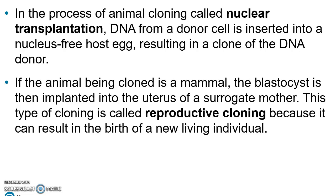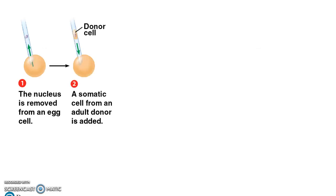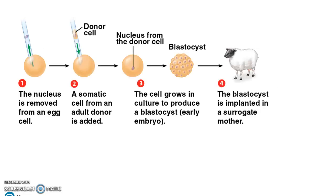If the animal being cloned is a mammal, the blastocyst — a very early developmental stage just after the zygote — is implanted into the uterus of a surrogate mother. That type of cloning is called reproductive cloning because it can actually result in the birth of a new living individual. This diagram shows the process of implanting the blastocyst into a surrogate mother, in this case a sheep.